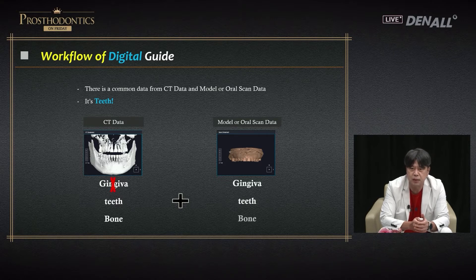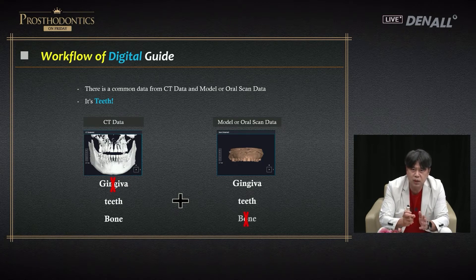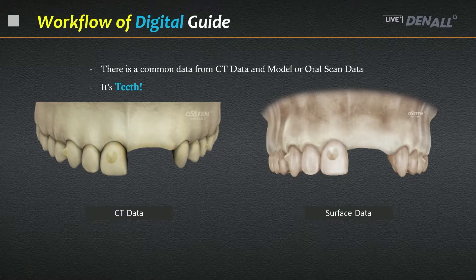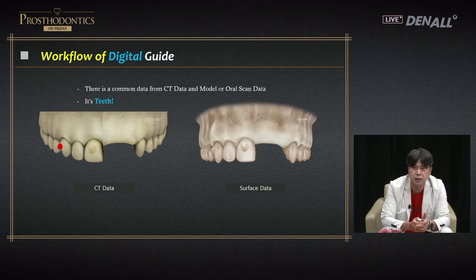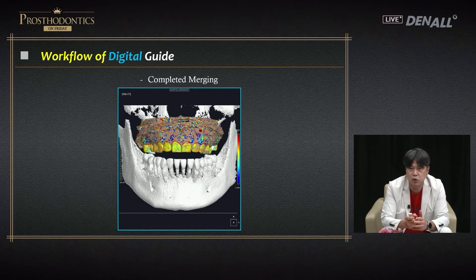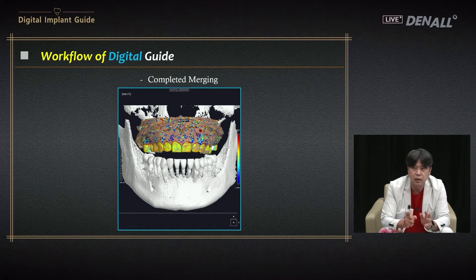Fortunately, there is a common denominator in both datasets: the teeth. Based on that, we can combine the two data together to get a complete set of information. On the actual software, CT data is on the left and surface data on the right — we mark the same point on the canine on both sides, and they can be merged. Surface data and CT data are merged to provide complete data including bone and gingiva.